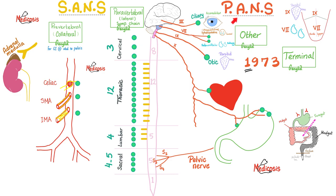Now let's talk about the parasympathetic autonomic nervous system reaching the urinary bladder. We want the lower fibers — sacral, not cranial. S2, S3, S4 will form the pelvic nerve, also known as the pelvic splanchnic nerve, also known as nervi erigentes. This nerve will supply the bladder by contracting the bladder wall while relaxing its sphincter.